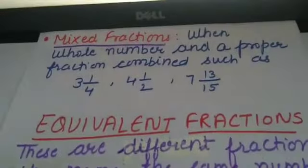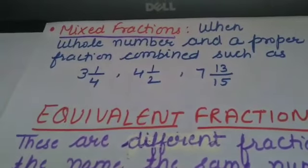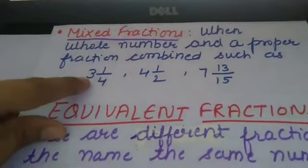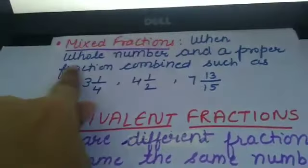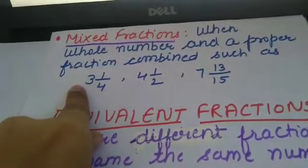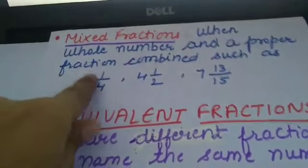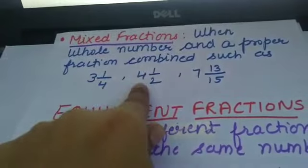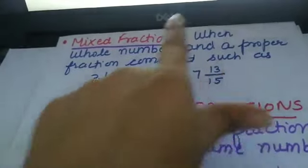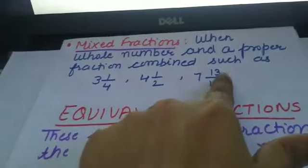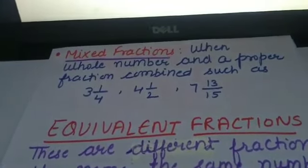Now come to the next type: mixed fractions. A mixed fraction has both a whole number part and a fractional part — that is, a whole number and a proper fraction combined to become a mixed fraction. For example: 3 whole 1 by 4, 4 whole 1 by 2, and 7 whole 13 by 15. These are all mixed fractions because they combine a whole number and a fractional part. So we have covered the types of fractions.